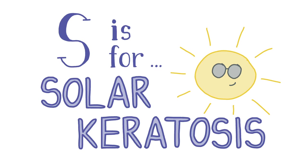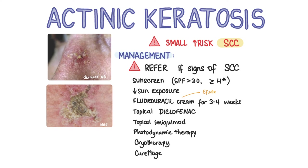S is for solar keratosis, also known as actinic keratosis. Actinic keratosis is a premalignant skin condition. There is a small risk of lesions transforming into squamous cell carcinomas, although most individual actinic keratoses resolve spontaneously. On examination, actinic keratosis looks like a small red, pink or skin-coloured crusty lesion found on sun-exposed areas like the scalp, face, shoulders and neck. Most individual actinic keratoses can be managed in primary care, although referral is necessary if there are any signs of SCC like bleeding, ulceration or nodularity.